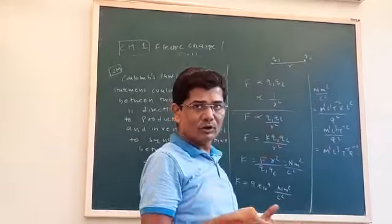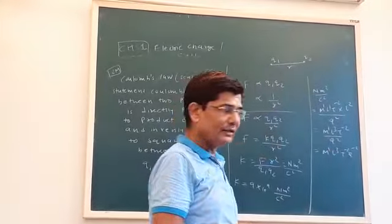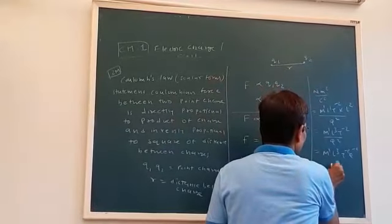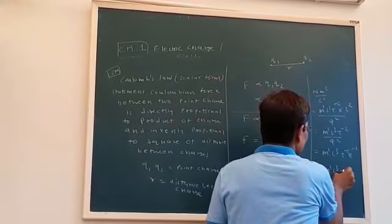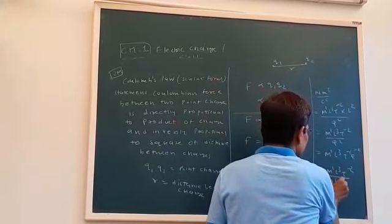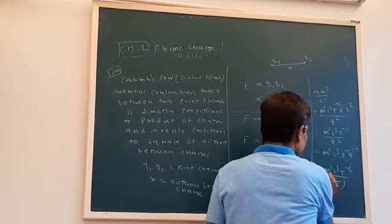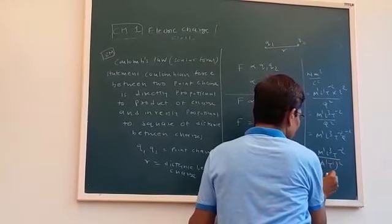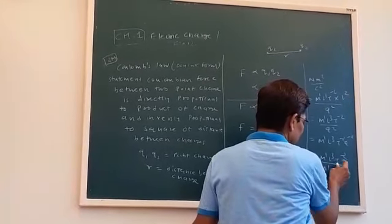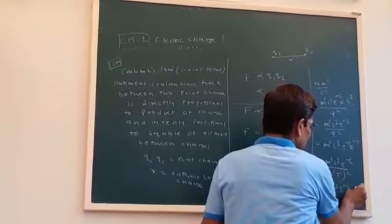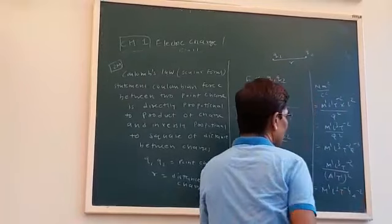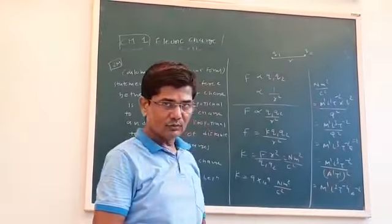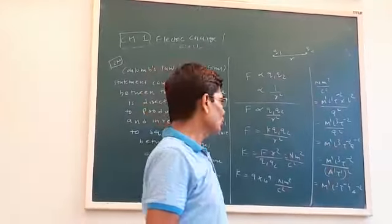Since Q = I·T, we can write the dimension as M1·L3·T⁻4·A⁻2. This can be asked in VSQ or short answer type questions.